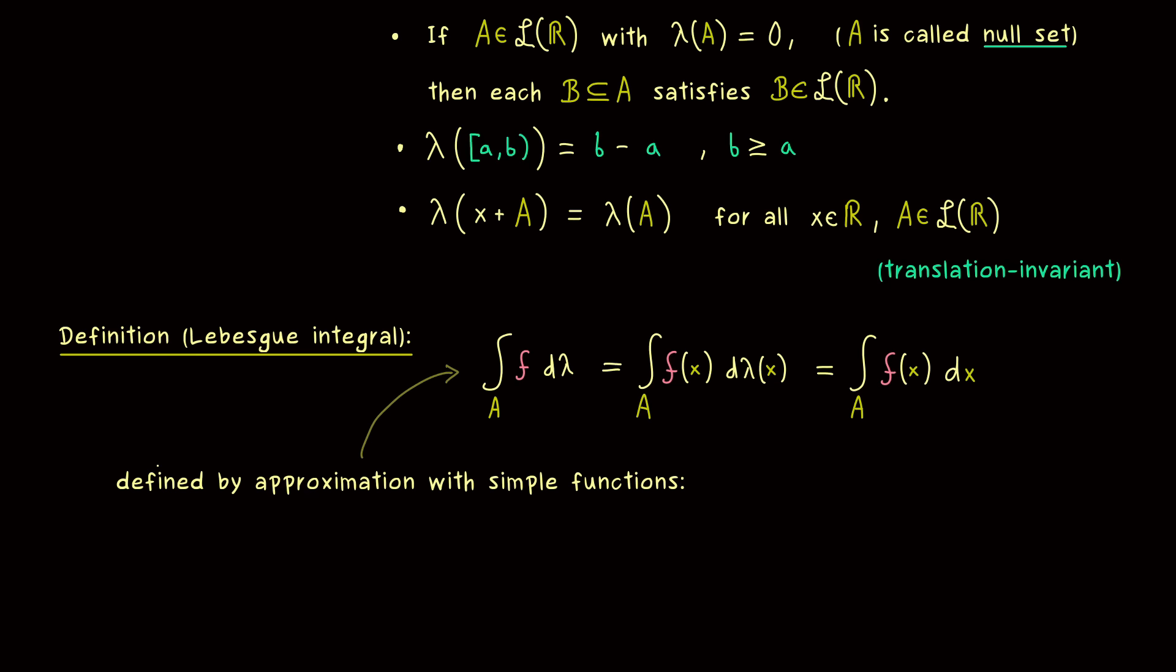Now the explicit definition of this approximation is given in the measure theory course. But here I can give you a picture of the idea. So first the function f should be given as a non-negative function. And then the simple function is just a function where the set of values is finite. And here we just want that the simple function lies pointwise below the graph of f. And then we see that for the simple function we don't have any problems looking at the pre-images on the x-axis.